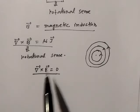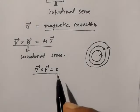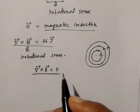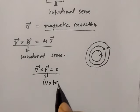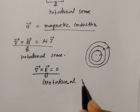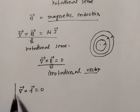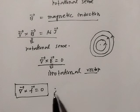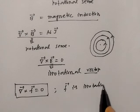When the curl of any vector field or any vector point function is zero, we say that this vector has no rotational sense and this vector is actually an irrotational vector. This is the physical significance of the curl of a vector point function.